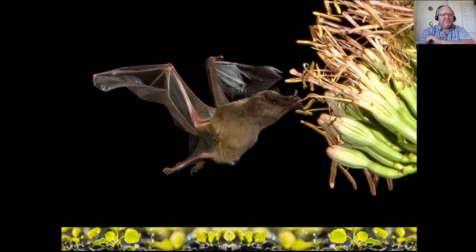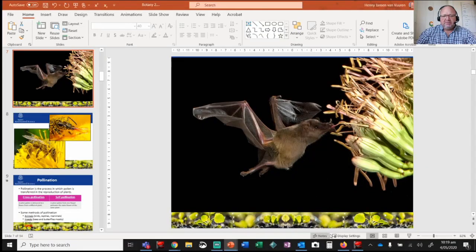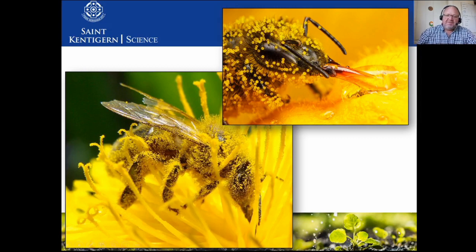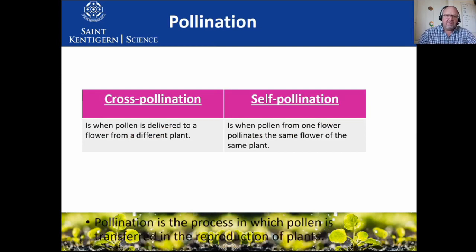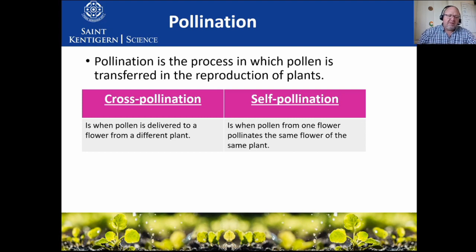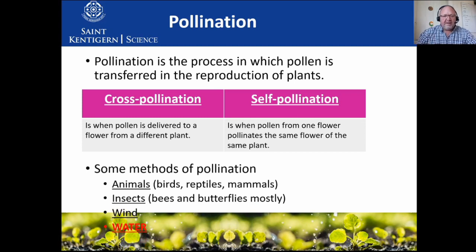Here's an amazing photo of a nectar droplet and individual pollen grains on a bee - they are hard working for us. You can see how they take the pollen from flower to flower. Cross-pollination is when pollen goes from one plant to another; self-pollination is when it occurs on the same plant or even the same flower. Cross-pollination is best for ensuring healthy offspring.